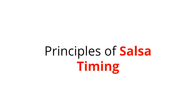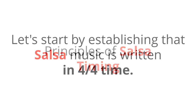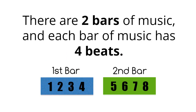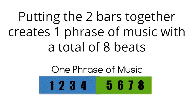Principles of Salsa Timing. Salsa music is written in 4/4 time. There are two bars of music, and each bar has 4 beats. Putting the two bars together creates one phrase of music with a total of 8 beats.